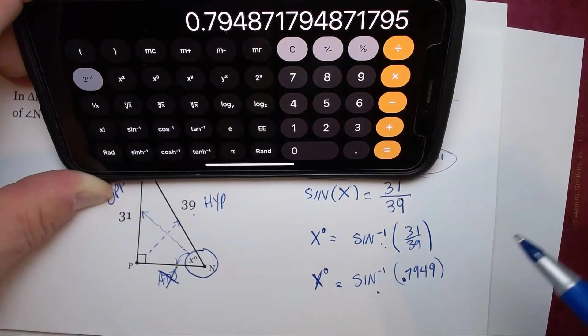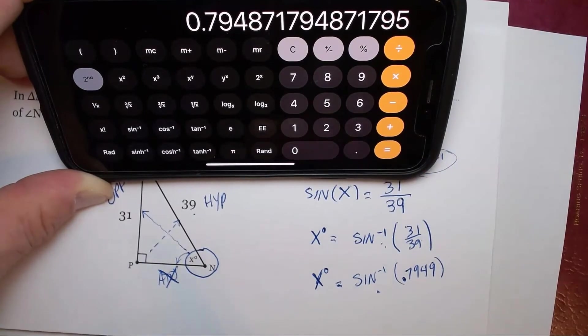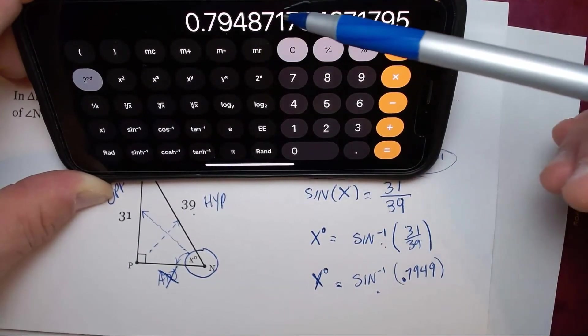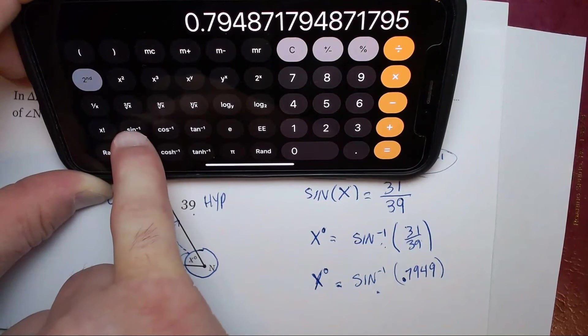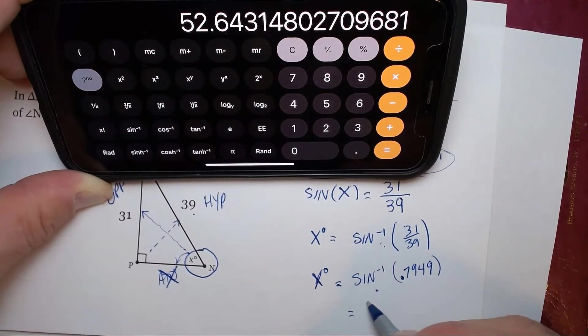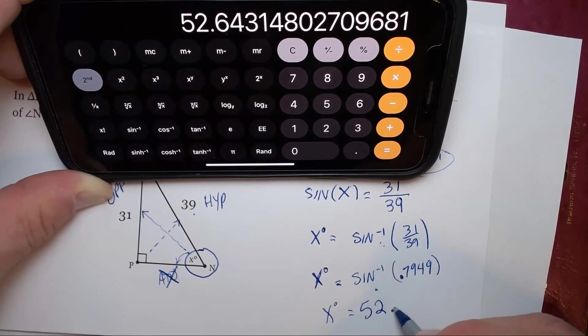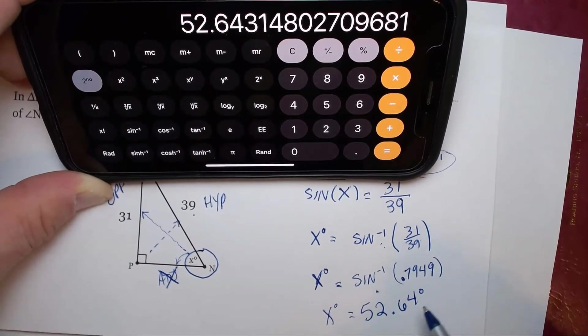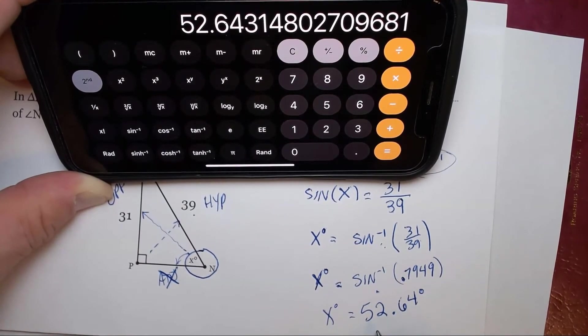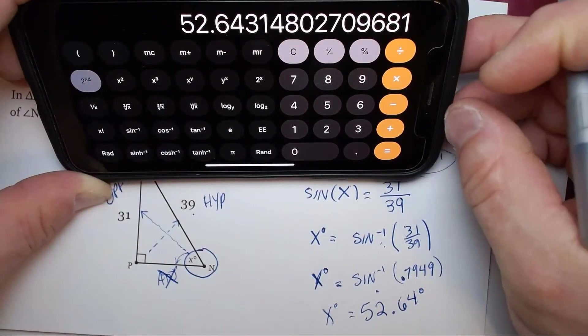Actually first, we have our value in the calculator already. So all we have to do to take the inverse sine of this number is press the inverse sine key. And you'll see it switches to X degrees equals 52.64 degrees. You can rewind and watch the video again if I'm going too fast here. I'm going to set the calculator to the side.